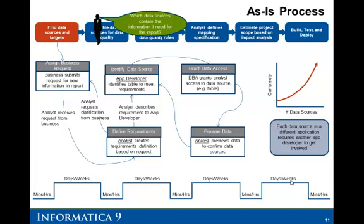Typically, an analyst working with a developer needs to identify the data sources and targets that are going to meet the business requirements. The question the analyst might be asking is: which data sources contain the information I need for this report? The first step is the business makes the request. The analyst will then create a requirements definition document, working closely with the business going back and forth, getting clarification, and getting a well-defined requirements document in place.